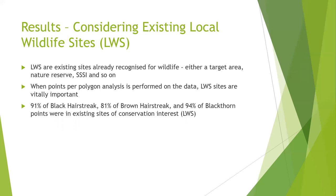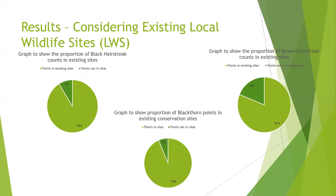When I performed the points per polygon analysis on this data, it was very clear that the local wildlife sites are vitally important. 91% of the black hairstreaks, 81% of the brown hairstreaks, and 94% of the blackthorn plants are already in existing conservation sites. The pie charts here show the significance of these results clearly.